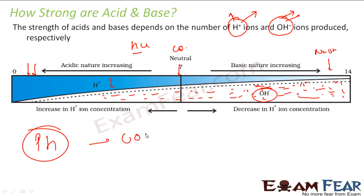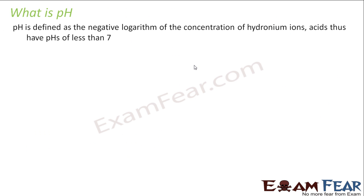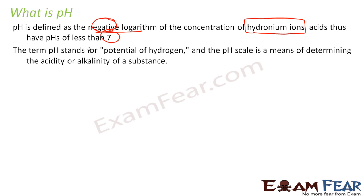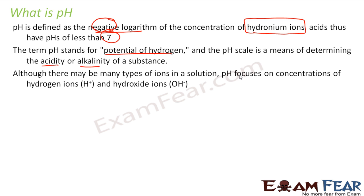pH value ranges from 0 to 14. pH is defined as the negative logarithm of the concentration of hydrogen ions. pH stands for potential of hydrogen — it is a scale for determining the acidity or alkalinity of a substance. Although there may be many ions in solution, pH focuses only on hydrogen ions and hydroxide ions. These two ions are the stars — there may be chlorine ions, sodium ions in a solution, but pH is only concerned with hydrogen and hydroxide ions.